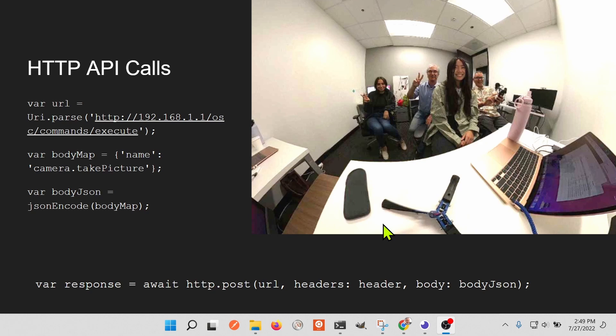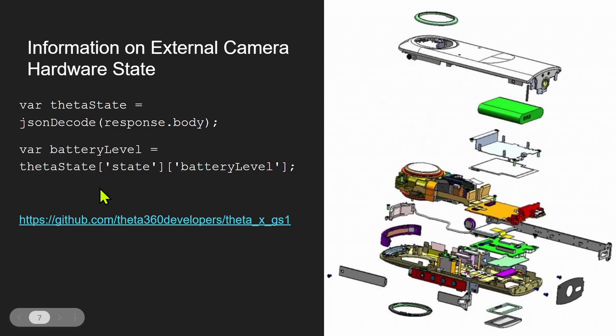This is our summer intern and staff who took a picture using this API call and built a mobile app pretty quickly. Because you're working with an external camera rather than the one built into the phone, you send an HTTP API call to get various states — for example, to get the battery level of the external camera. You send a similar API call and get the body back. To get the body into a format that Dart and your Flutter application can use, you need to decode the JSON.